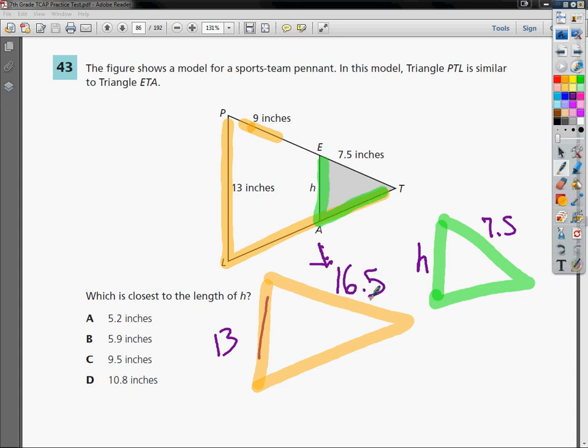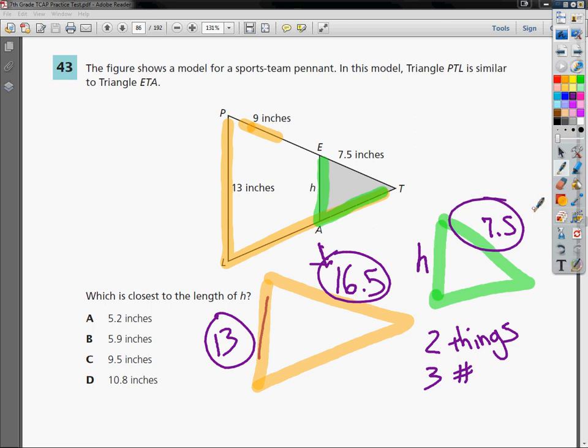The question says that the triangles are similar, which means that you can create a proportion because the sides are proportional. And it totally meets my 2-3-4th thing. It's got two things, that would be the two triangles. It's got three numbers: 13, 16.5, and 7.5. And you're looking for the fourth number, which they have written as H. So I can set up a proportion for this.